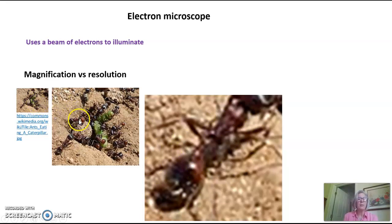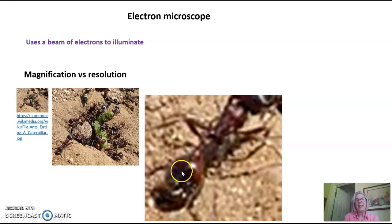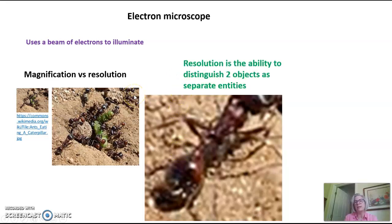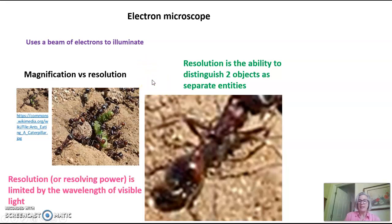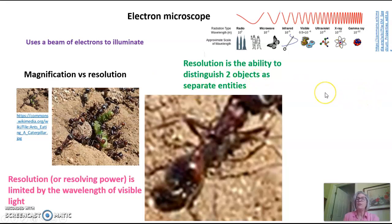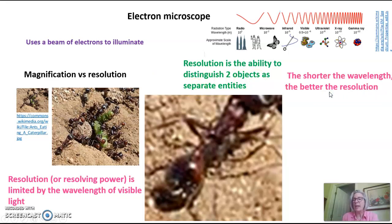When I went from the small picture to the bigger picture, it helped — I could clearly differentiate between the ant and the rock. However, when I made it bigger still, it did get bigger but it didn't get any clearer. I cannot resolve the difference between the ant and the background. Resolution is the ability to distinguish two objects as separate entities. When you're using visible light and you magnify more and more, at some point you lose resolution. Resolution is limited with visible light. However, if we use something with a shorter wavelength, you can get better resolution.